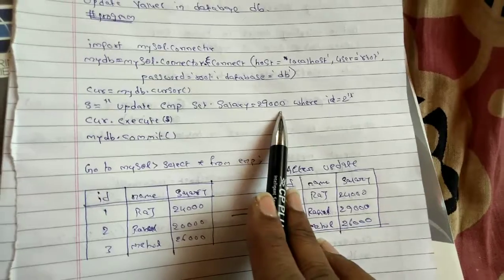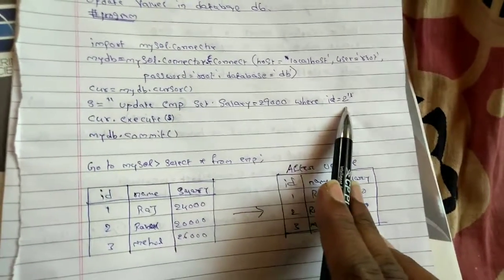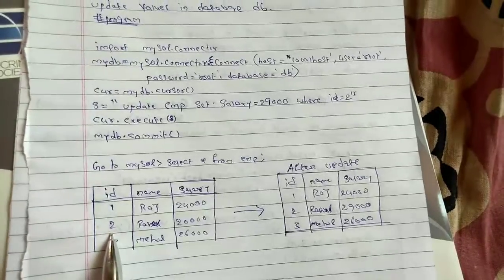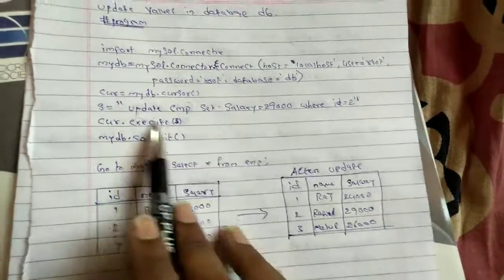It will set the salary to 29,000 where id is equal to 2. Wherever the id number is 2, it will set the 20,000 salary to 29,000. That is an update command.